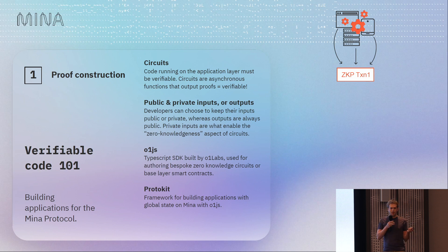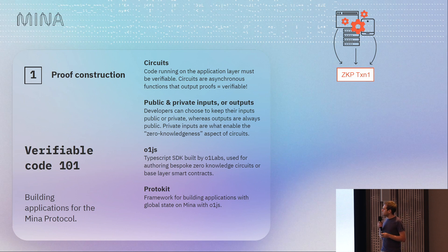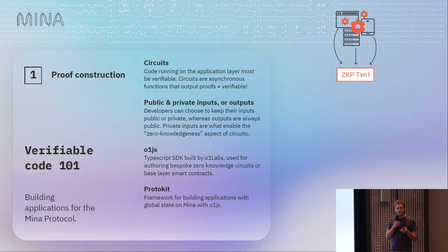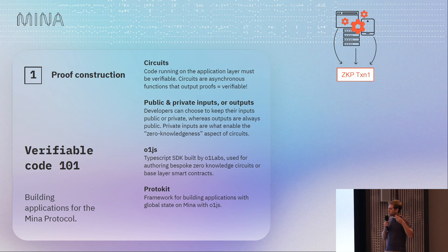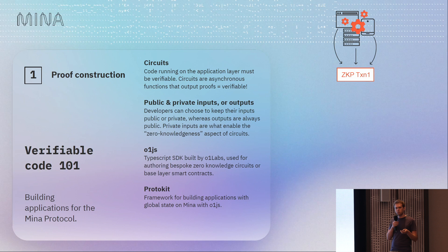This also gives you the public-private property: you can make some inputs hidden and private so you don't have to reveal them — you get privacy. You can also make certain things public if you want to for your applications. There's also a new framework called Protokit, which takes the native zero-knowledge experience — which often has a lot of challenges, particularly since it's often UTXO-based at the core — and adds a lot of functionality to make it very easy as a developer to build with zero-knowledge proofs. The mental model is much closer to Solidity or normal smart contracts, so it's definitely worth checking out.